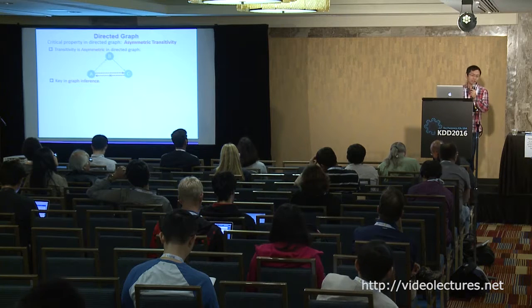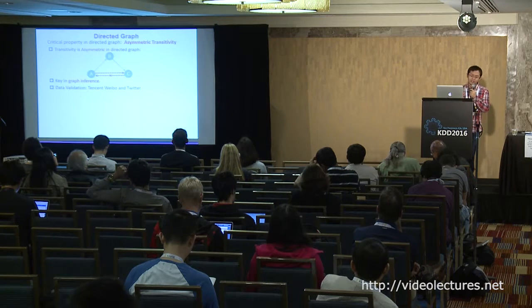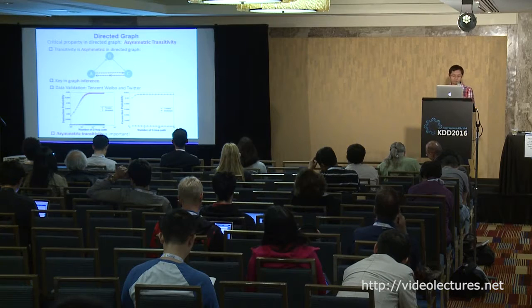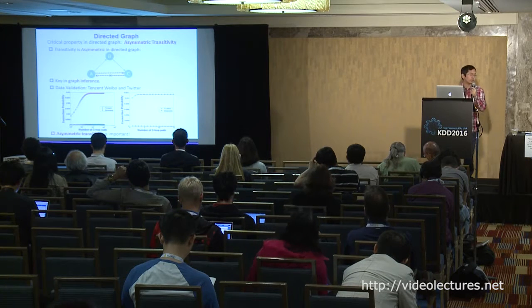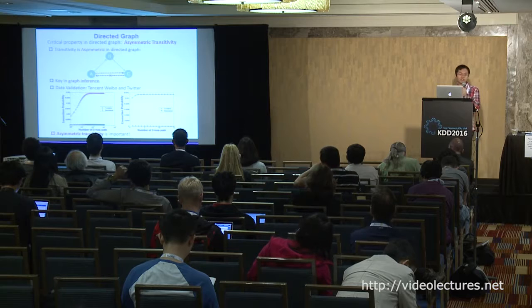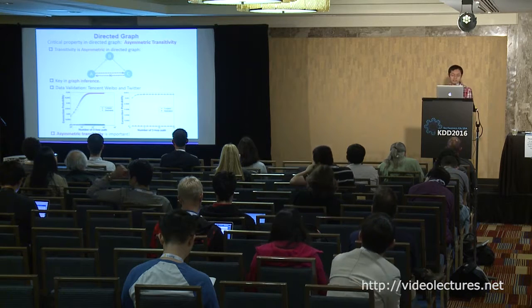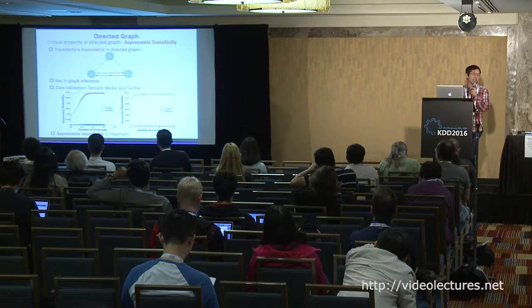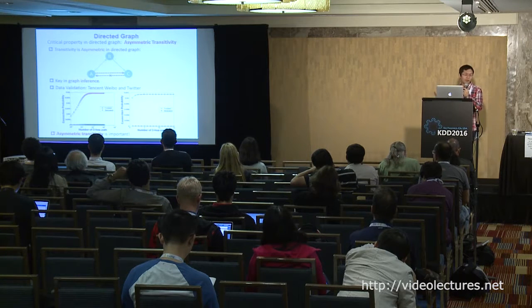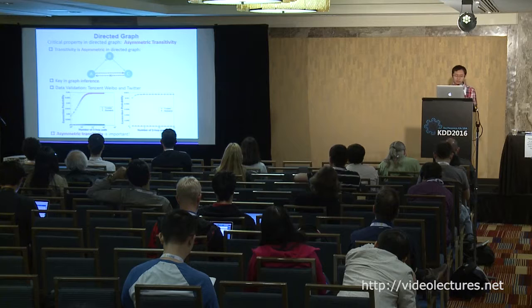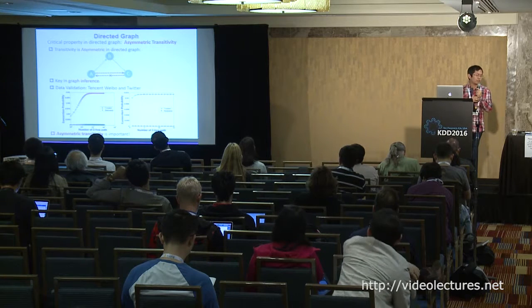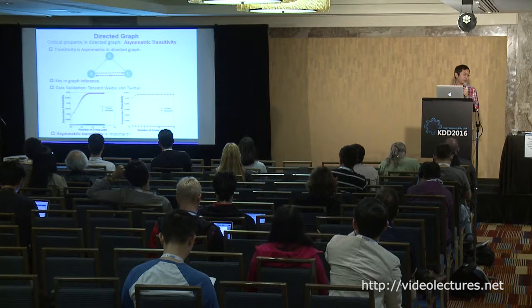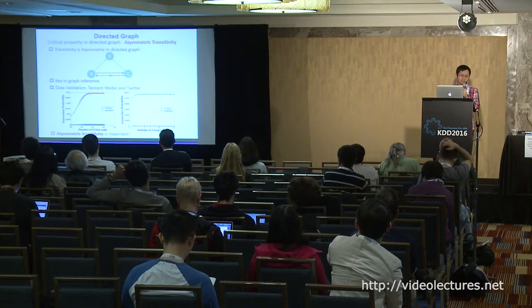Is this true in real data? We did some data validation in Tencent Weibo and Twitter. We plot two users' connection probability versus their number of two-hop paths. We can see that when going forward they are positively related, but when going backward they are not. This means asymmetric transitivity indeed exists and may be ubiquitous, so it is important that we consider it.